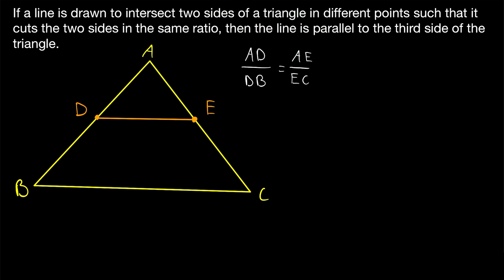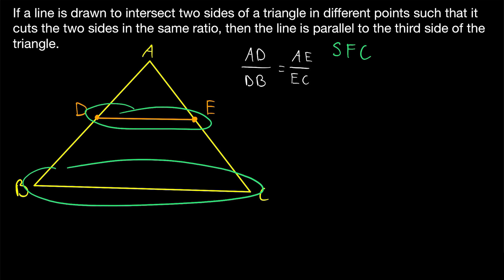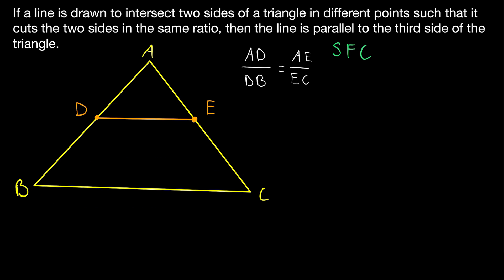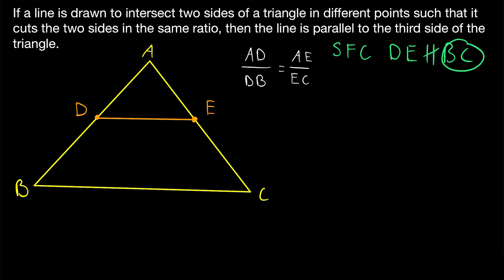Now let's get into proving the converse. This is going to be a proof by contradiction. So we're going to suppose for the sake of contradiction that our desired result is not true — that DE is not parallel to BC.